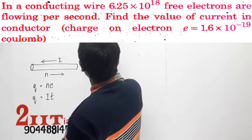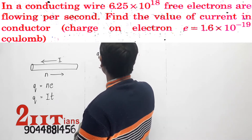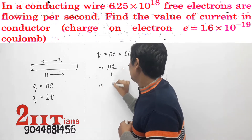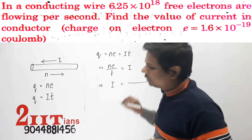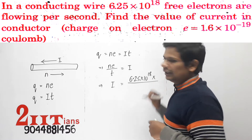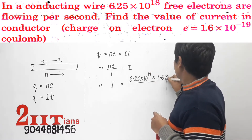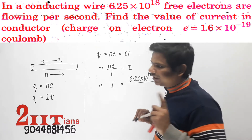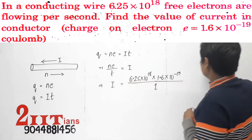So Q = ne = It. I is what we need to find out. Our formula becomes: I = ne/t. The number n is 6.25 into 10 to the power 18, e is 1.6 into 10 to the power negative 19, and time is one second.